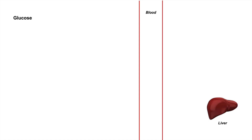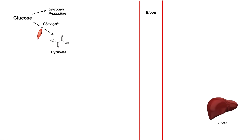Glucose utilization and alanine deamination can produce lactic acid, so let's talk about the pathways. Glucose can be directed into several different pathways: glycogen production or glycolysis, which generally occurs in muscles. The end product of glycolysis is pyruvate, and that's essentially where our story begins. When there's oxygen present, pyruvate can be directed into the mitochondria to undergo the TCA cycle.